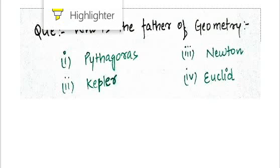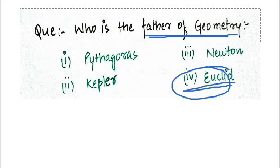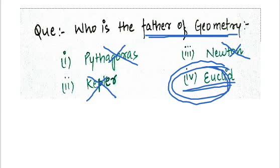The very first question is, who is the father of geometry? This is a quite general question. The father of geometry is Euclid. Not Newton, not Pythagoras, and not Kepler. The father of geometry is Euclid.